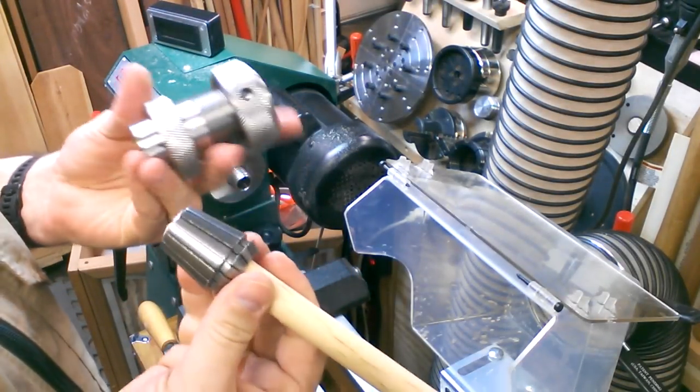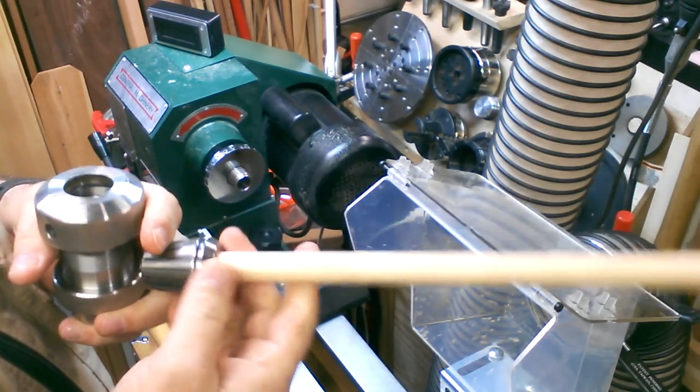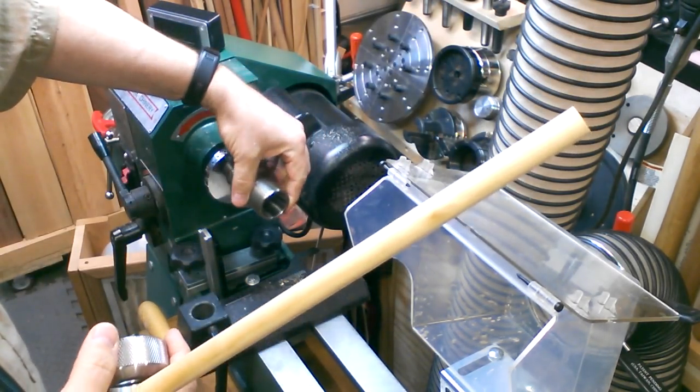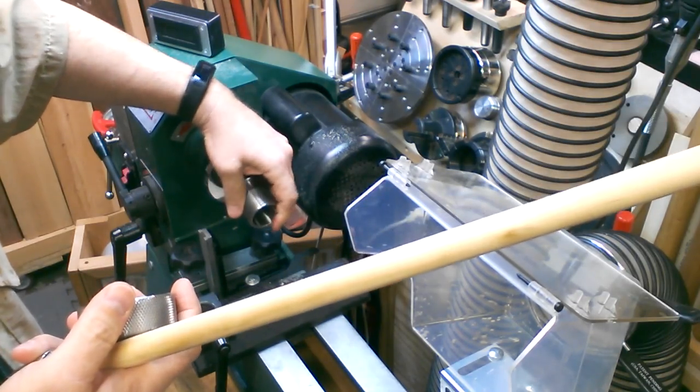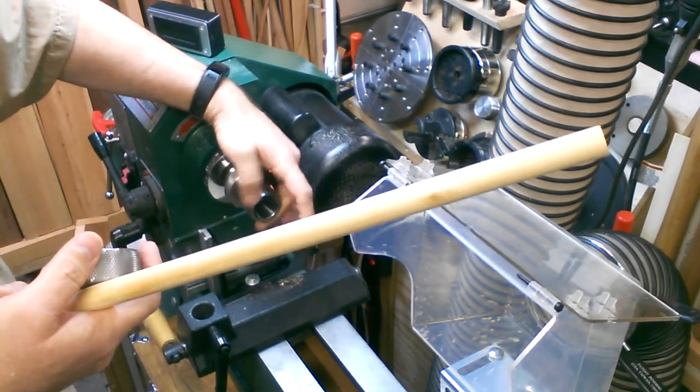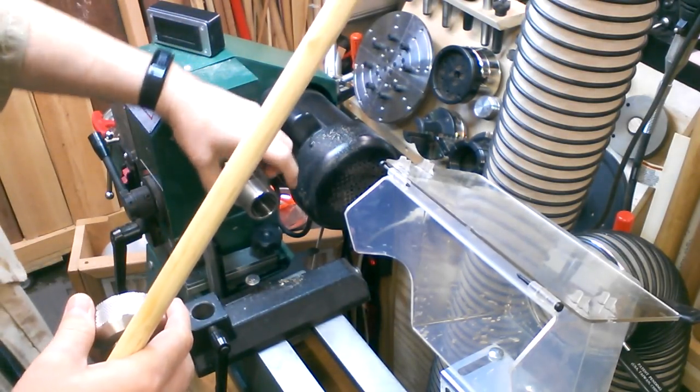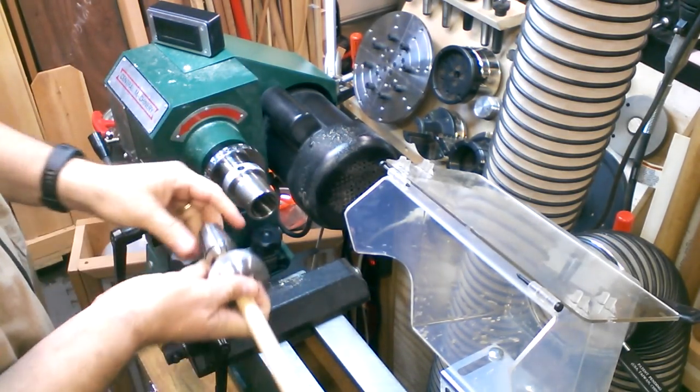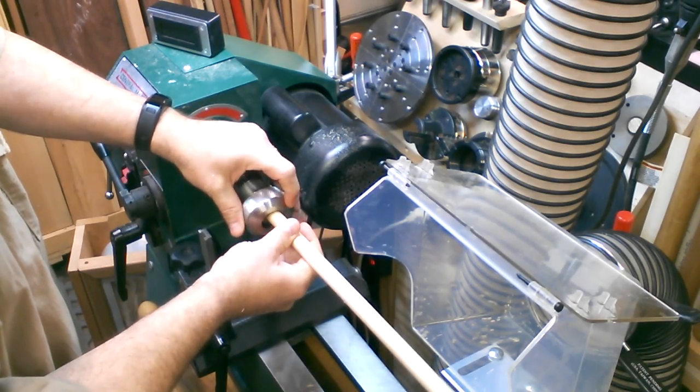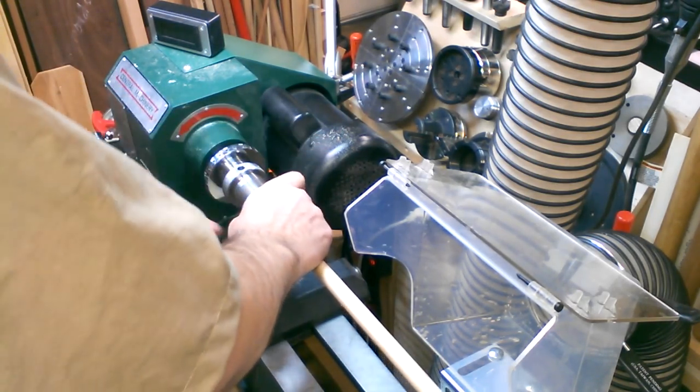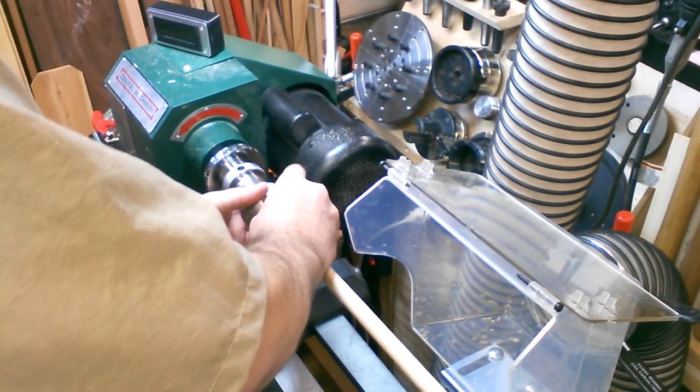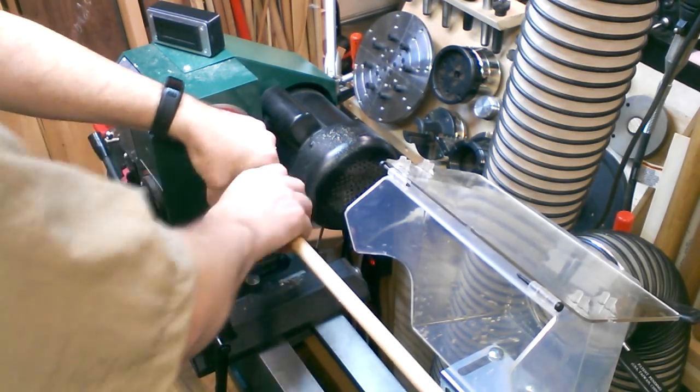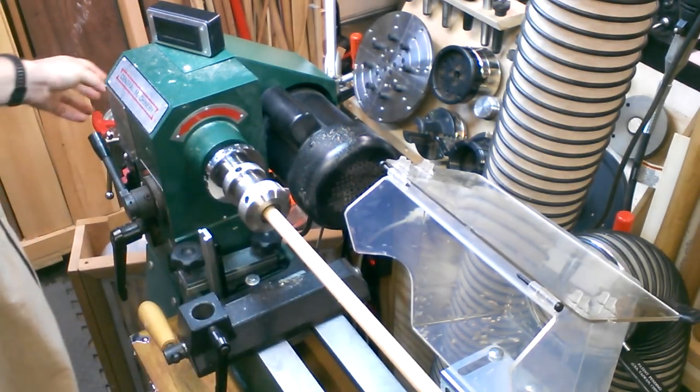For this next step, I'm going to take my PSI collet chuck. I've got the 5 eighths collet and I'm going to chuck this up so that I can sand the dowel from being 5 eighths down to something closer to 9 sixteenths, because that's ultimately the size that's going to fit in that PVC. And again, I'm not going to actually turn this. I don't want to take off too much either. I just want to get down to a nice fit inside that PVC.